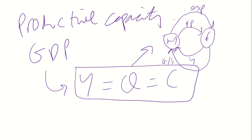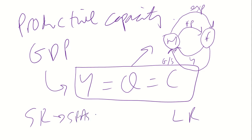Households give firms your factors of production. In return for factors of production you get paid income, and then you will obviously spend your income — expenditure — and in return for that you will get goods and services, which is what we call output. That is GDP in a nutshell. Types of economic growth: we've got short run economic growth and long run economic growth. Short run economic growth is determined by SRAS and AD, and long run economic growth is determined by your LRAS. I've got videos on SRAS, AD and LRAS if you need to revisit those.